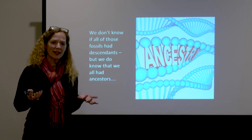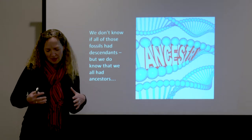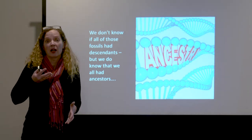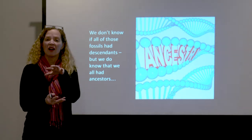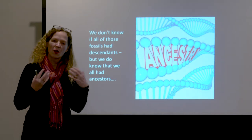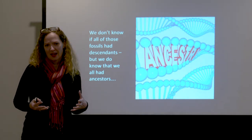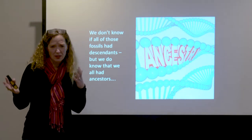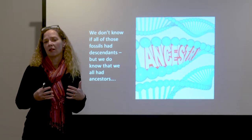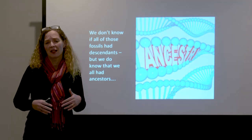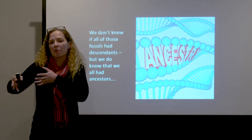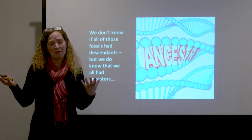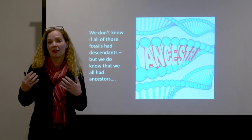What Alan did was recognize that rather than working from fossil material and trying to reconstruct how we got to where we are today, he flipped that thinking. He said we don't know that all of those fossils had descendants — when we look at the fossil hominid tree, many of those fossils are evolutionary dead ends. The robust australopithecines, for example, didn't produce anything that still exists today; they were an evolutionary dead end, possibly ultra-specialized for a particular kind of diet.